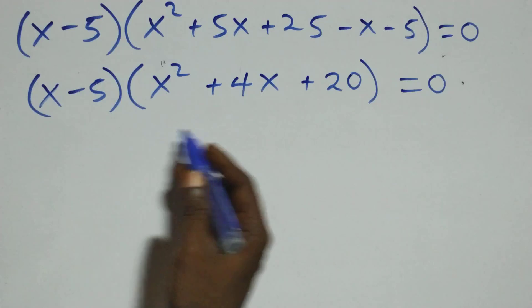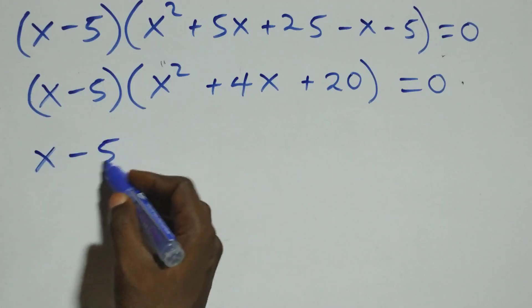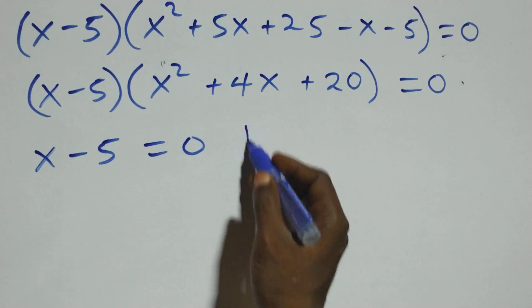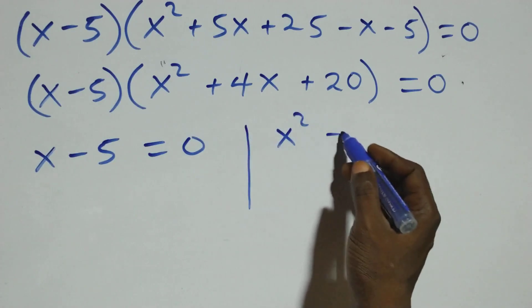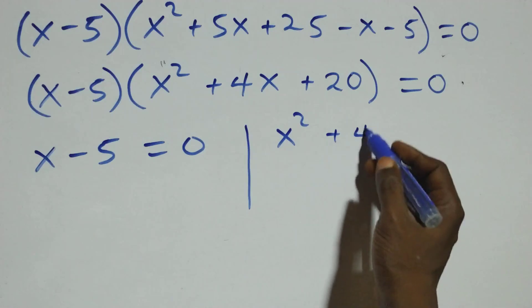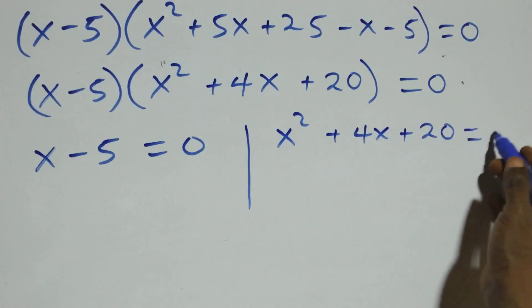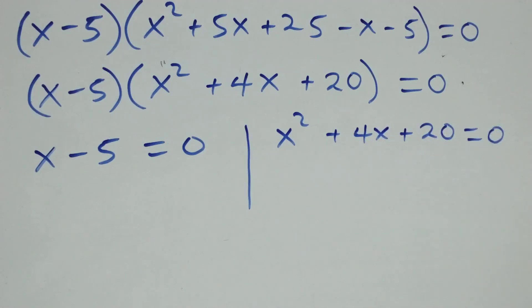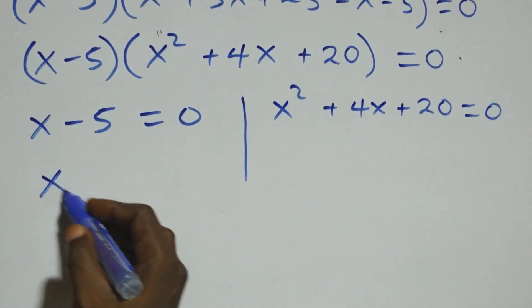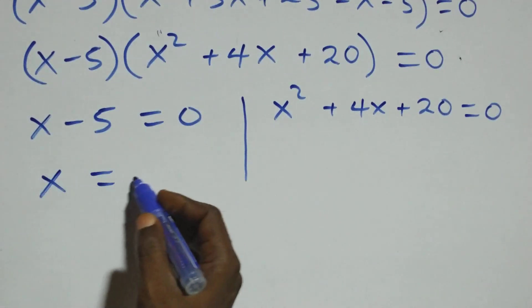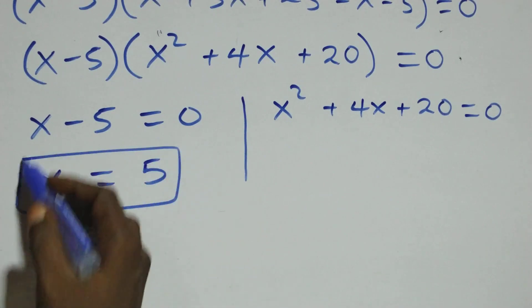Now we have two possible cases. The first one: x minus 5 equals to 0, or we have x squared plus 4x plus 20 equals to 0. Solving the first case gives us x equals to 5, which is a real solution.